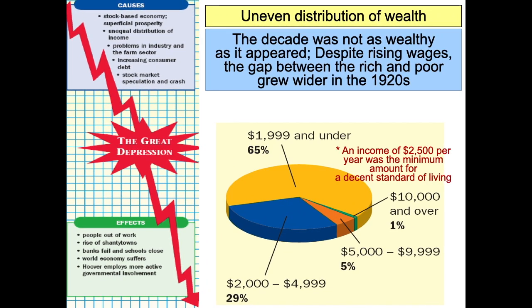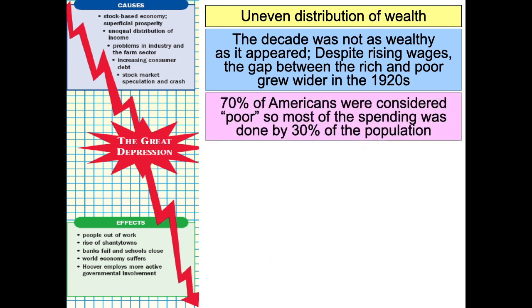The fourth concern is the huge uneven distribution of wealth. We talk about the 20s being the Roaring 20s, but in fact it wasn't roaring for about 70% of the American population. The decade was definitely not as wealthy as it appeared. Despite wages going up, the gap between the rich and the poor dramatically increased. If you look at this pie chart, you can see it clearly: 65% of the American people lived below what was considered a decent standard of living. People making $10,000 and over were less than 6% of the population, when $2,500 was considered just a basic living wage. Over 70% of them would be considered poor by the standards of the time.